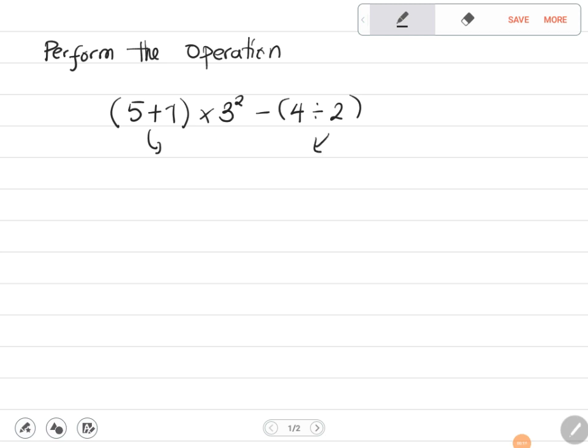So let's do that. Here we have 6, then we have multiplied by 3 squared minus 4 divided by 2, which we get as 2. Next, we need to deal with the square.